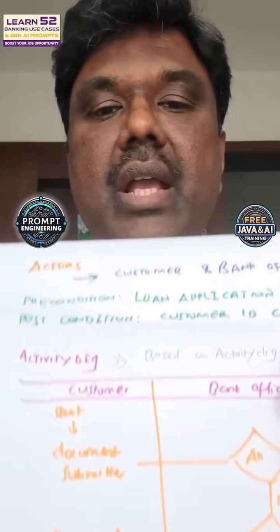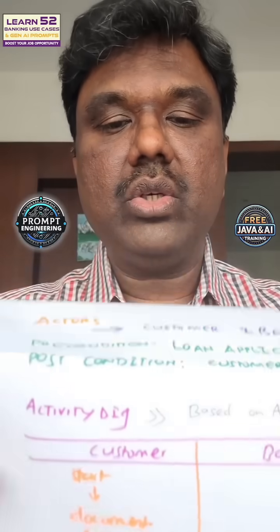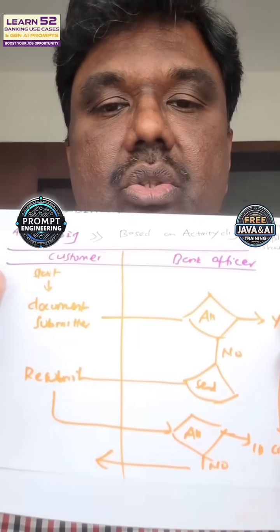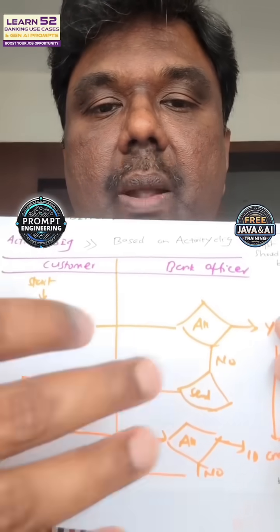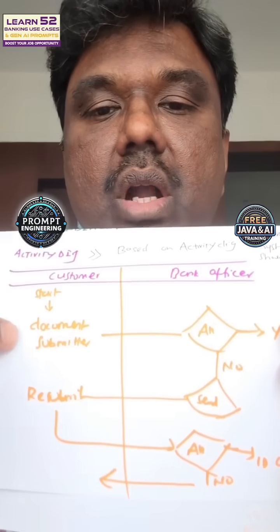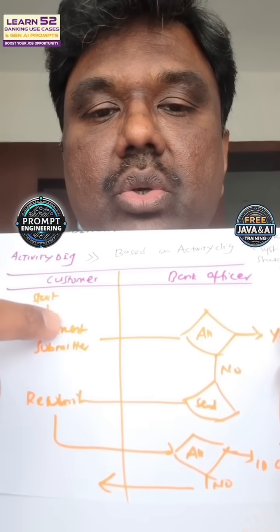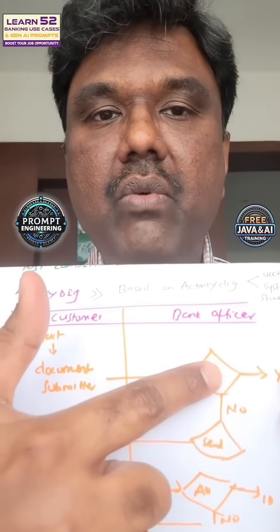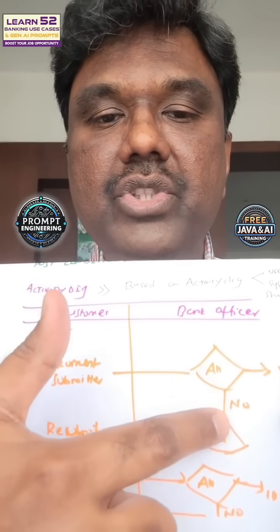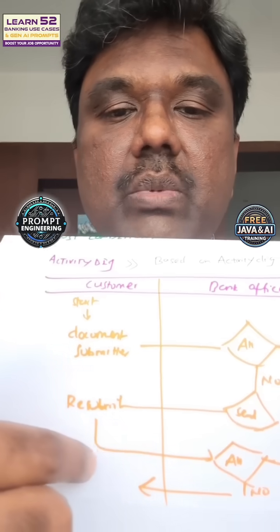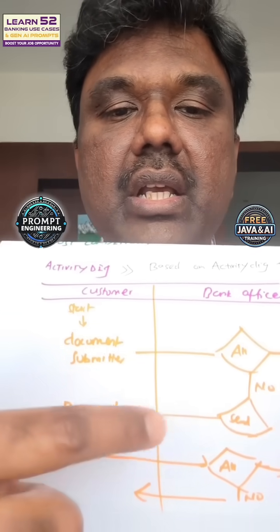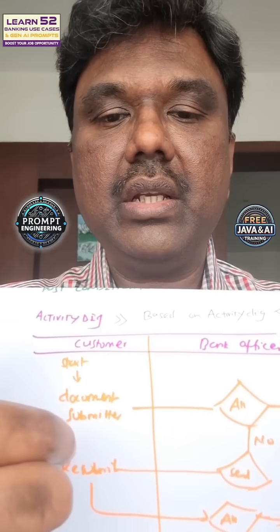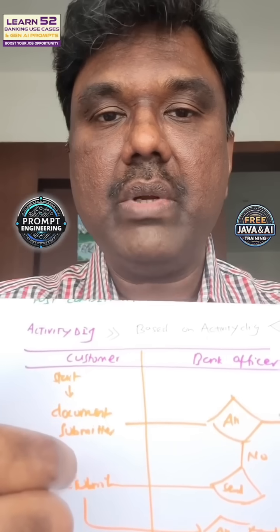So how does the activity diagram look like? The activity diagram will look like this. There is a customer and a bank officer — what the customer should do, and what the bank officer should check. If the check is passed, the customer ID is created; if the check is failed, come back and more documents should be collected.